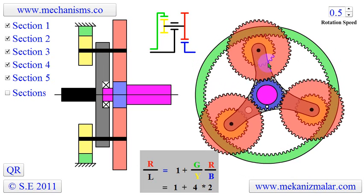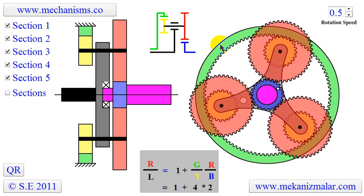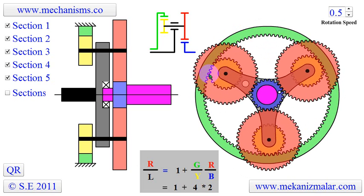Epicyclic gearing systems also incorporate the use of an outer ring gear, or annulus, which meshes with the planet gears.